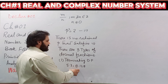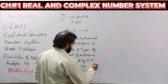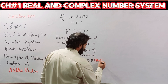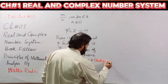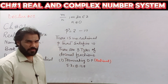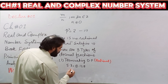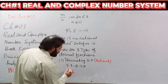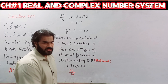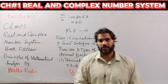A terminating decimal fraction is always a rational number because it can be converted to p over q form. Simply, 5.3 can be written as 53 over 10, which is the p over q form, where 53 and 10 are both integers.